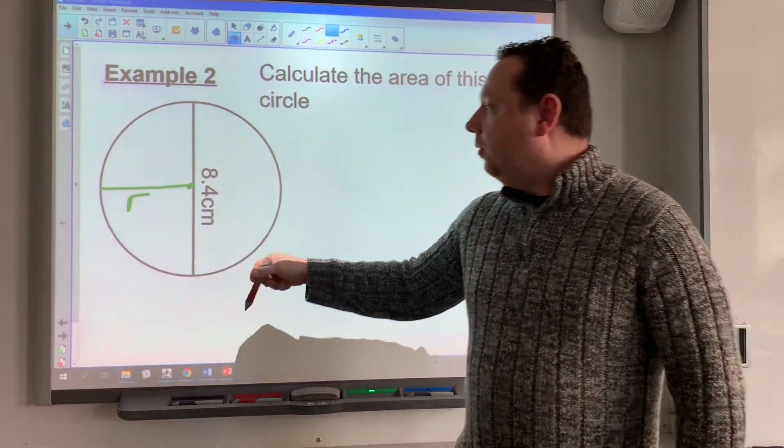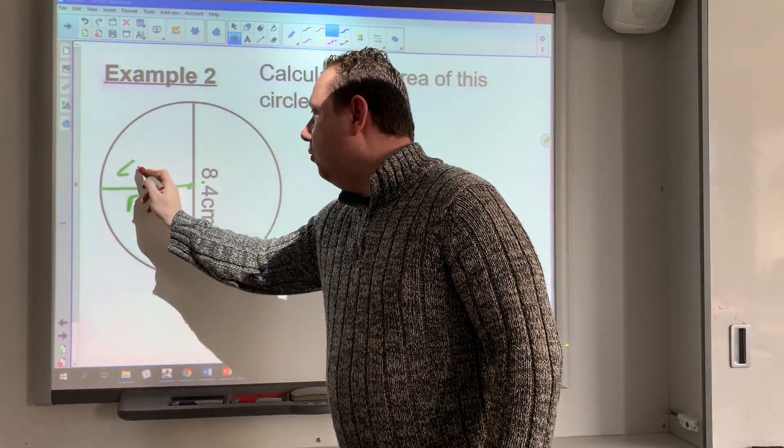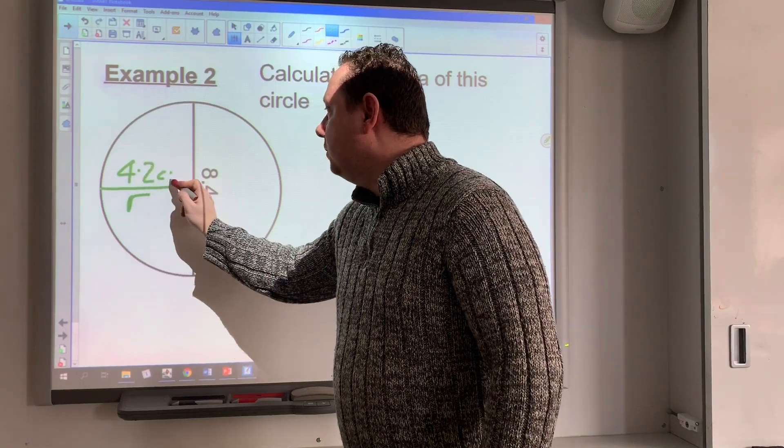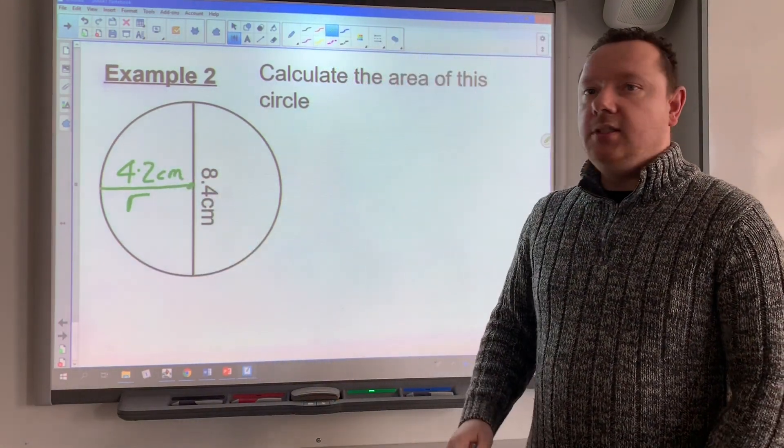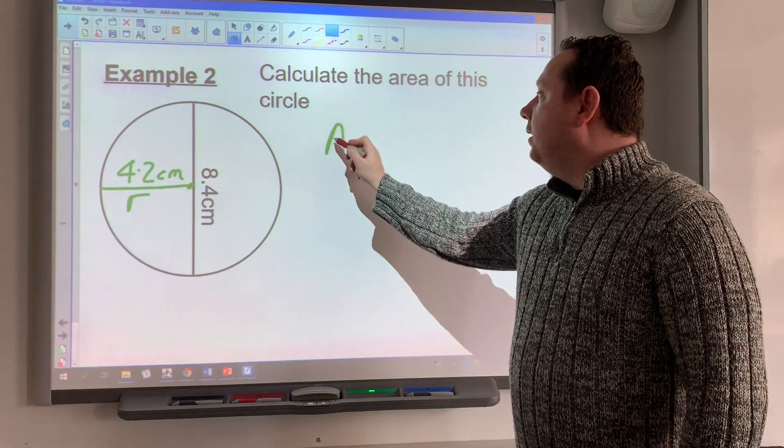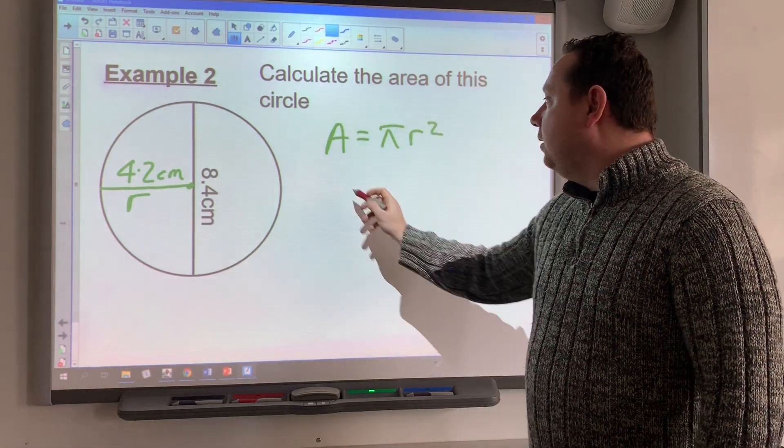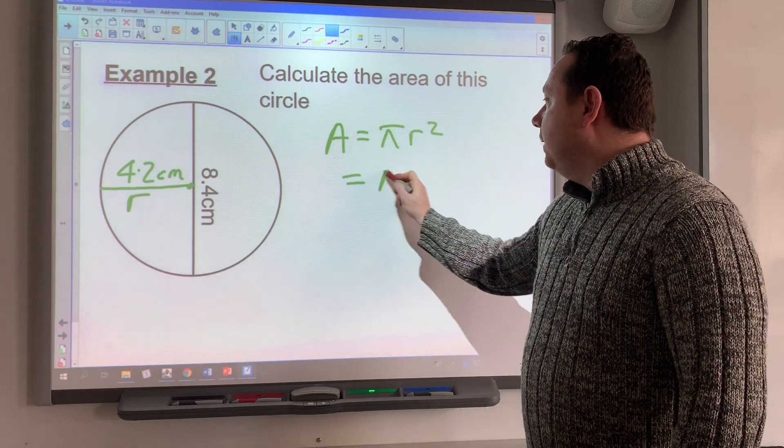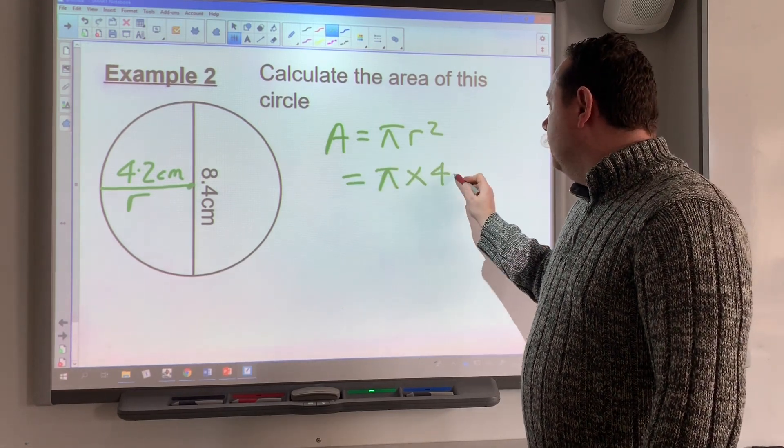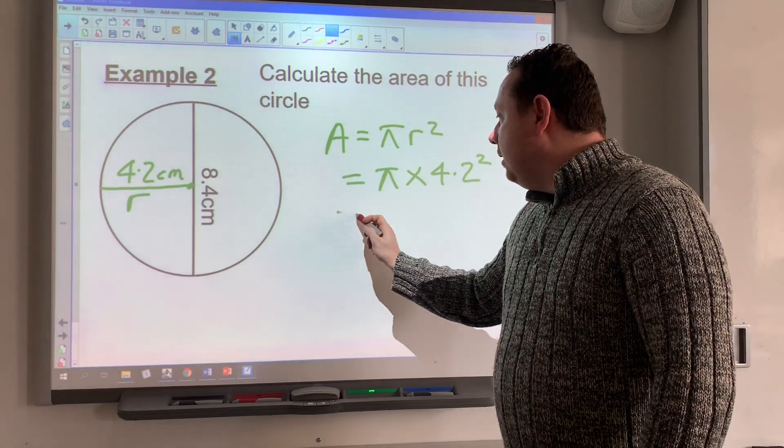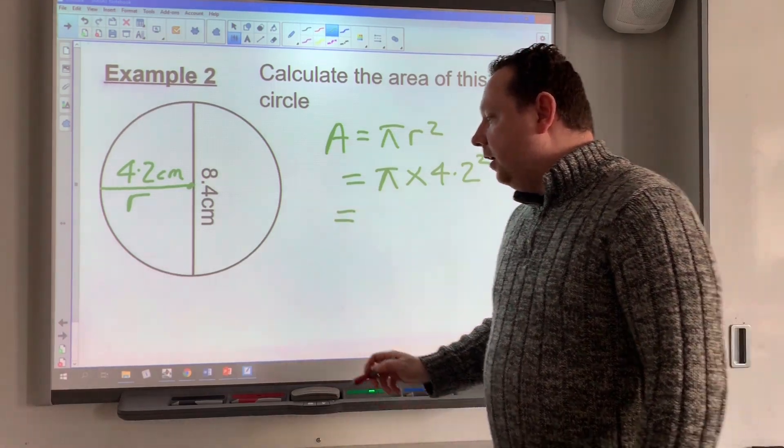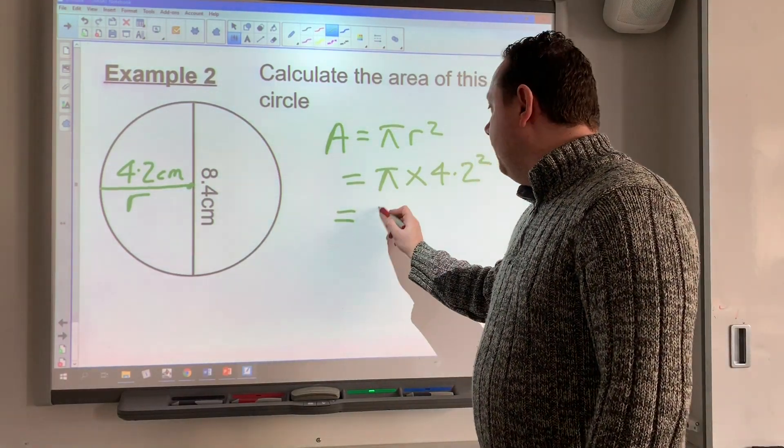Half of 8.4 gives me 4.2 cm. I start the same way again: A = πr². So that's π × 4.2². Putting all that into a calculator, this time I would get 55.417...